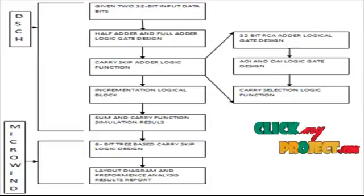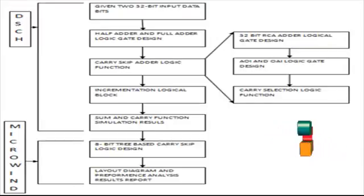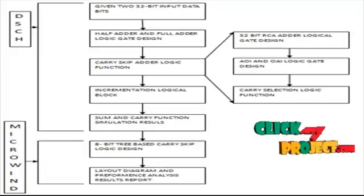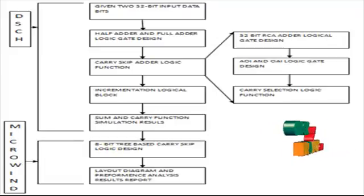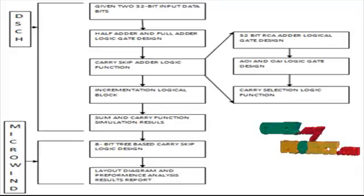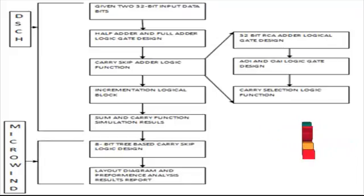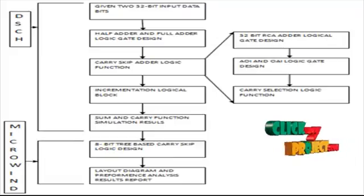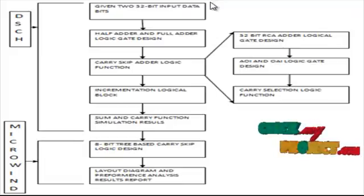Next we see the flow diagram for the product. Our product was developed in DSCH2 and Microwind software. The DSCH2 software is used to design gate-wise and transistor-wise components. Microwind converts the DSCH2 design into layout form and calculates the power, timing, and energy levels for the overall adder architecture, which mainly implements carry skip logic.